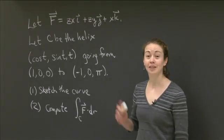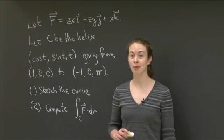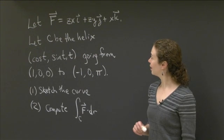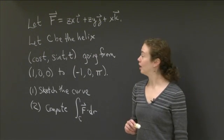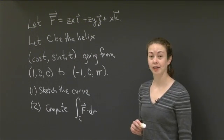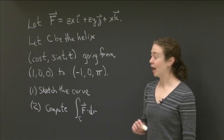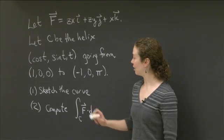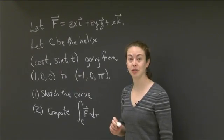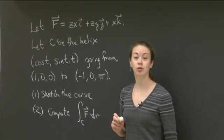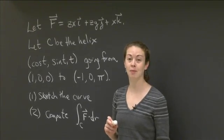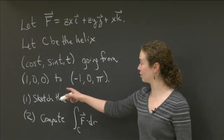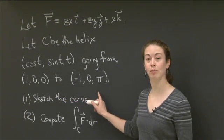Welcome back to recitation. In this video, I'd like us to work on the following problem. We begin with a vector field F = zxi + zyj + xk, and we're going to look at the curve C that is a helix described by the parameter t as (cost, sint, t). We're interested in the portion of the helix that goes from (1,0,0) to (-1,0,π).